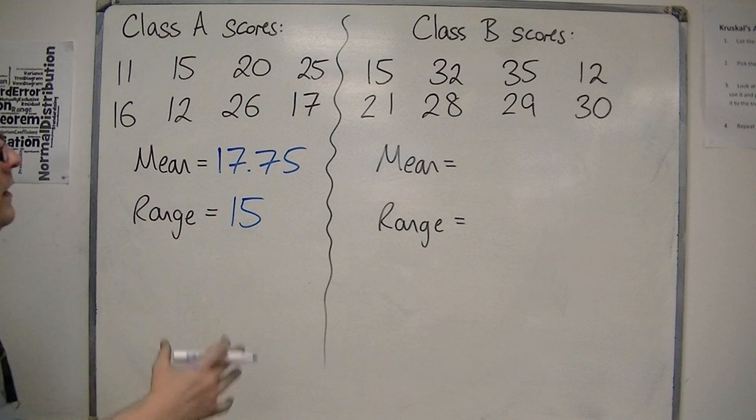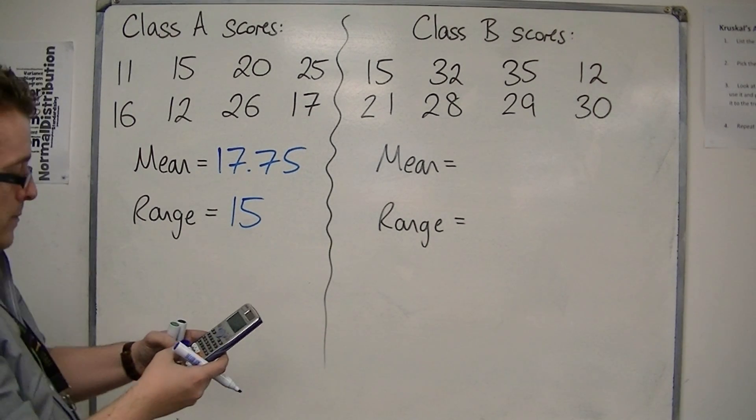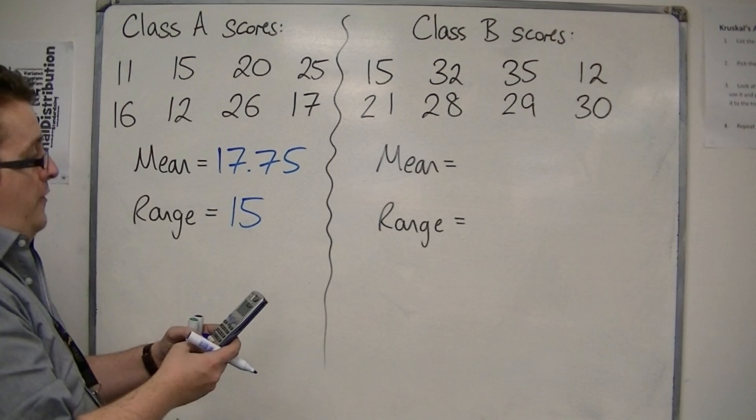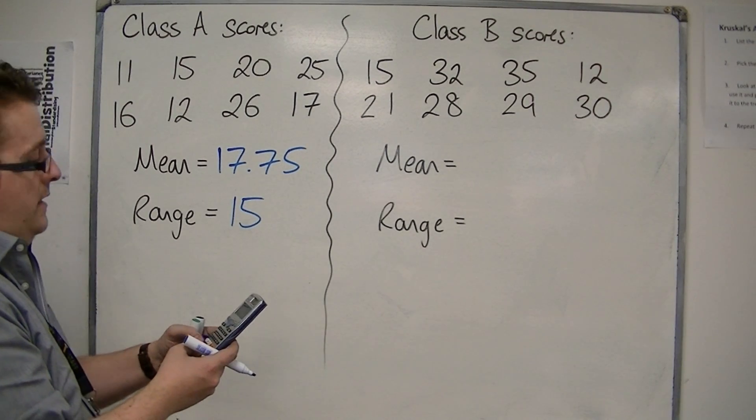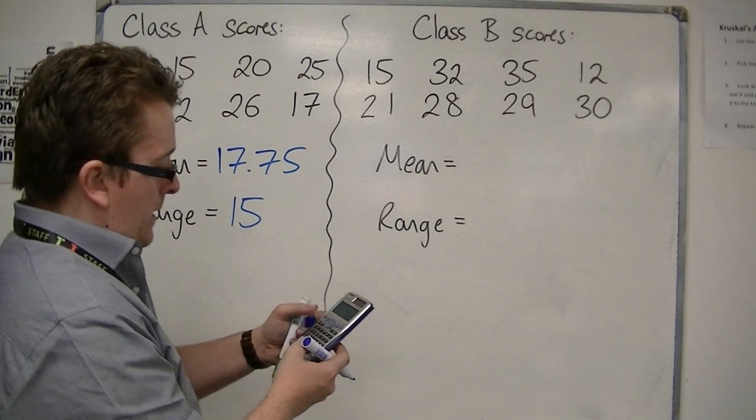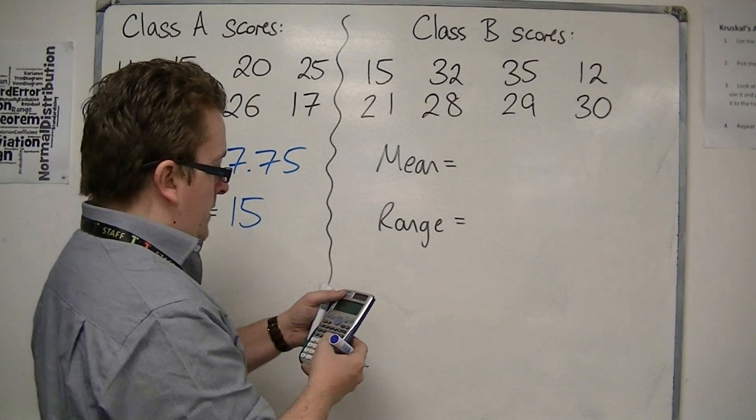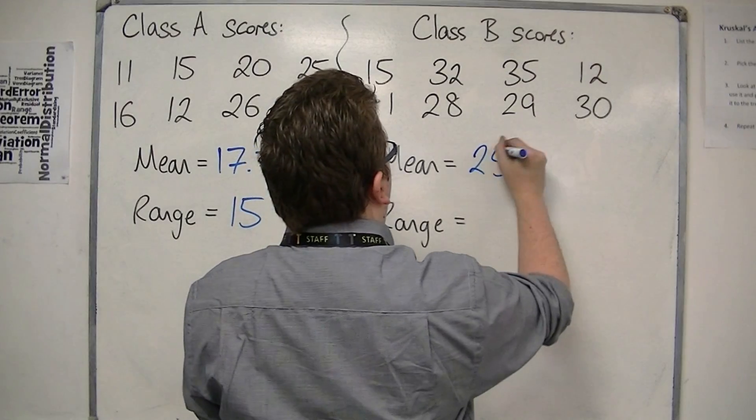Now for Class B, we add them all up: 15, plus 32, plus 35, plus 12, plus 21, plus 28, plus 29, plus 30, and divide that by 8, is 25.25.